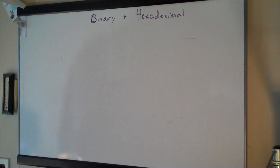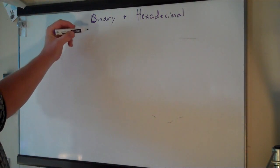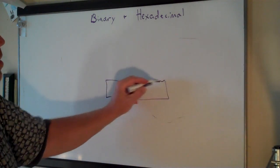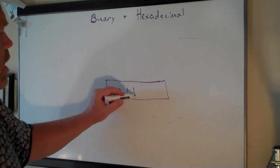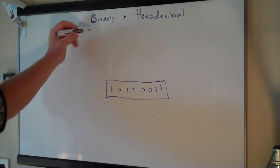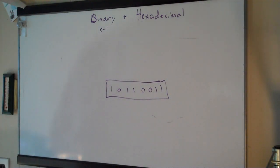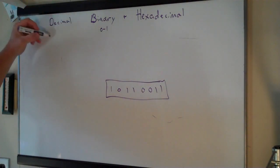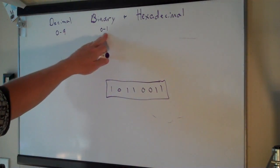Binary is a system that computers use down at the low level where everything is bits. If you have an 8-bit byte, that means you have 8 values, and each value is 0 or 1. So in binary there are only two possible digits, 0 or 1. In our normal decimal system, you have 0 through 9 — 10 possible digits. In binary there's just 2.